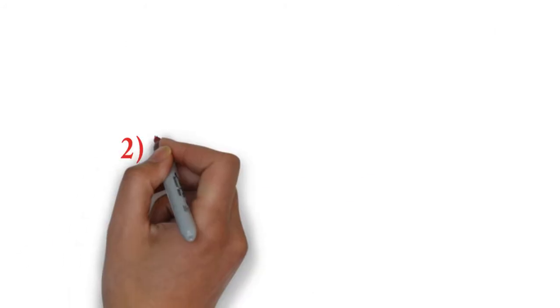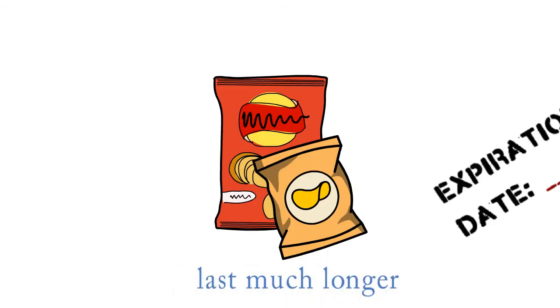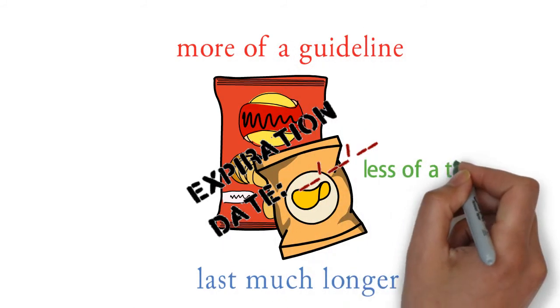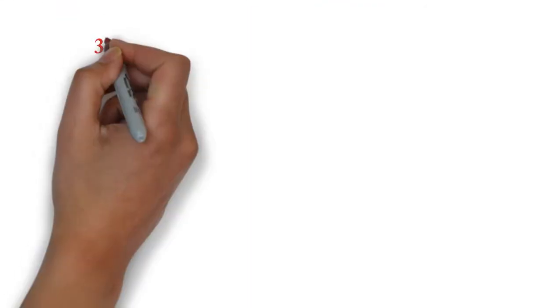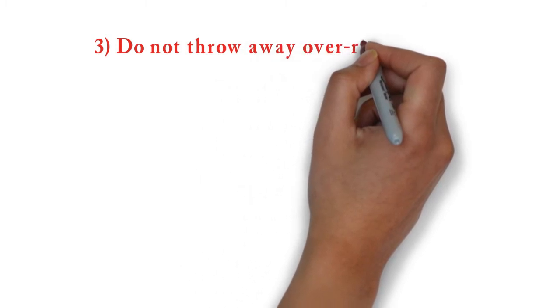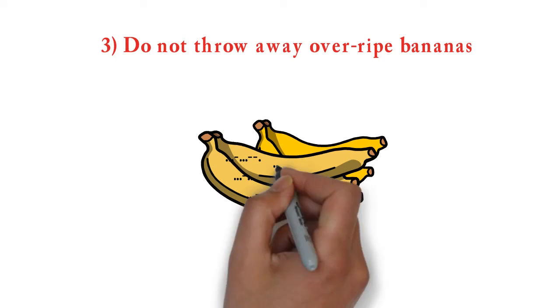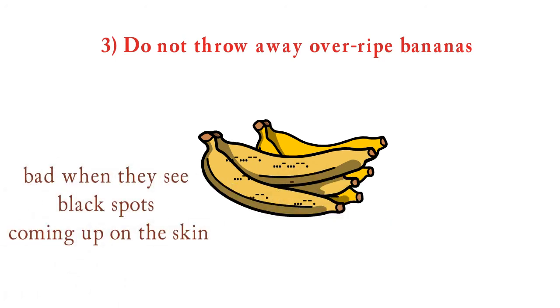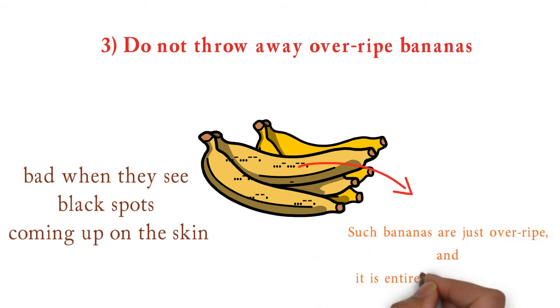Number 2: The cookies and chips sitting on your shelves last much longer than the expiry date printed on them. The expiry date is more of a guideline and less of a threat. As long as they do not smell or look funny when you open them, they are perfectly okay to eat. Number 3: Do not throw away overripe bananas at the mere appearance of few black spots. People often feel that the banana have gone bad when they see black spots coming up on the skin. Such bananas are just overripe and it is entirely safe to eat them.